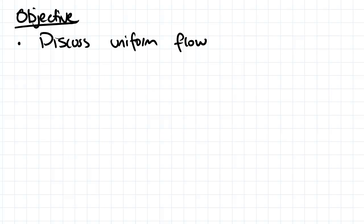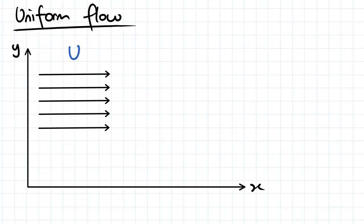Hey guys, the objective for this video is to discuss uniform flow. Uniform flow is essentially a flow that is straight, parallel, and has a uniform magnitude. This is an example here of uniform flow.